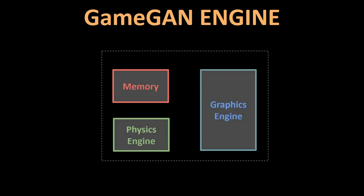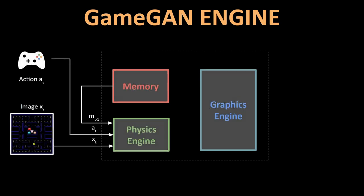The physics engine takes three inputs: the action from the controller to move the player, the image showing the current state of the game, and a latent vector representation of that image stored in the memory module. It then updates this latent representation of the game and updates the memory module along with the action taken for future use. This helps it to maintain the game's consistency, like object permanence, over a longer period of time.